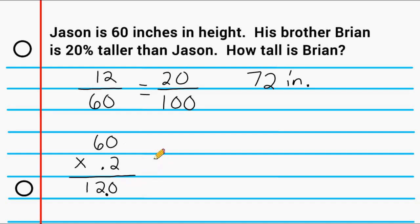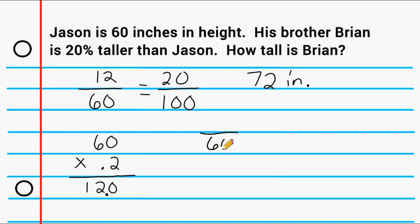That's another way to determine that Brian is 12 inches taller than Jason. Now let's go back to how we started this problem. Originally I stated that 20 can go into its total 5 times, so the numerator must fit into its total 5 times. But let's say you weren't able to identify that, and your teacher wanted you to show your work or set up a proportion. You would leave the numerator blank, knowing you're finding some part of 60, and it has to equal 20%. And 20% written as a fraction is 20 out of 100, since a percent is always out of 100.